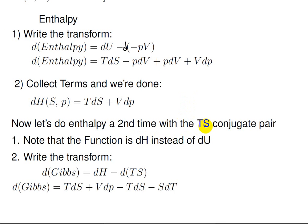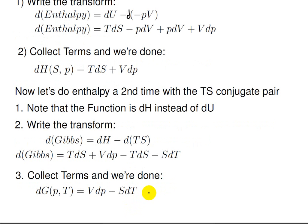Now let's do enthalpy a second time with the ts conjugate pair — this time the function will be dh instead of du, giving us the Gibbs free energy. We write dGibbs equals dh minus the derivative of ts. So dGibbs equals tds plus vdp (that's dh), minus tds minus sdt. Collecting terms, the two tds terms cancel, and dG as a function of pressure and temperature equals vdp minus sdT.